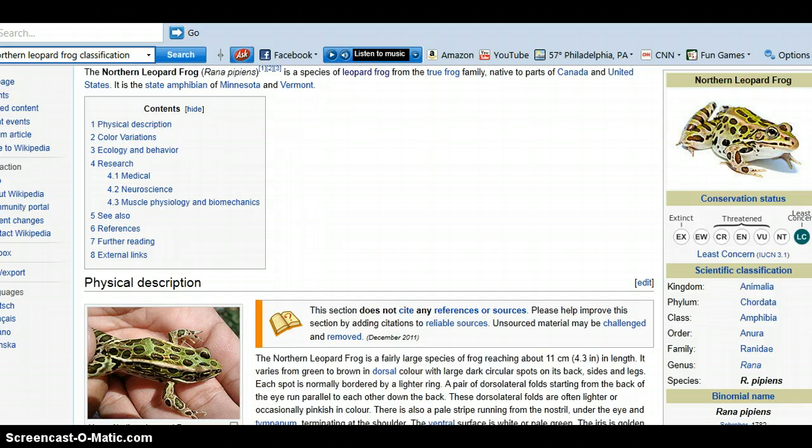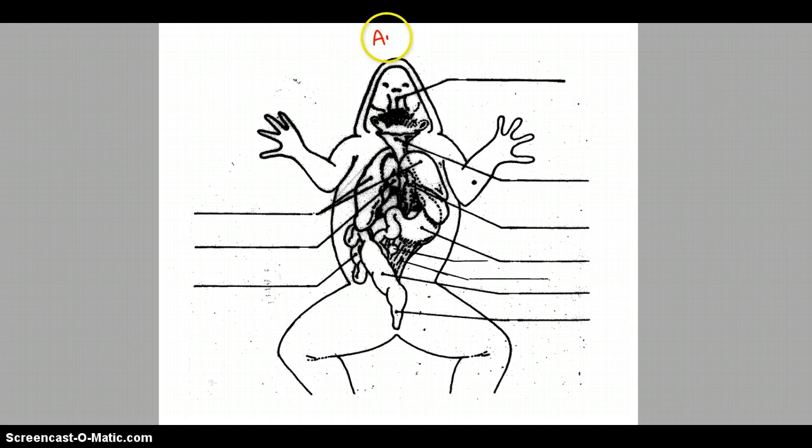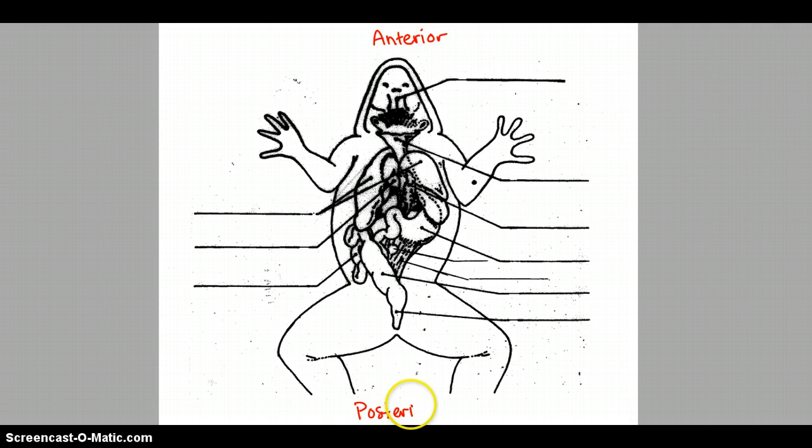Let's look at our diagrams now. Here is the internal anatomy of the frog. First we can label that this is the anterior end — remember that means towards the top or the head region — and then we have the posterior region which is towards the bottom. We are looking at the ventral surface, which is the belly surface. The other side would be dorsal, or the backside of the organism.